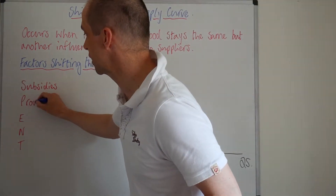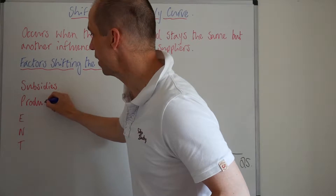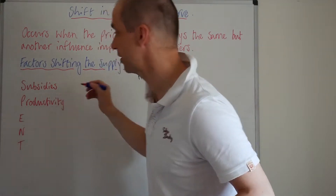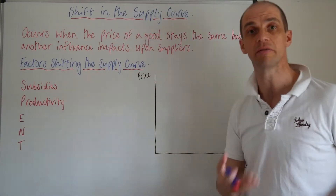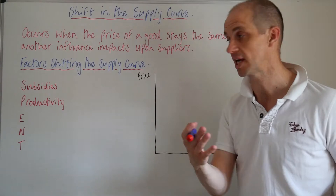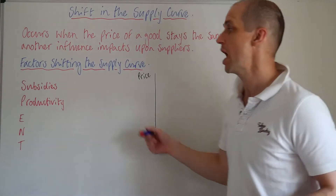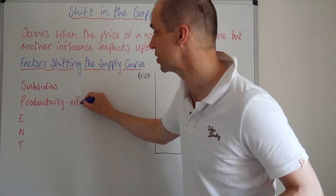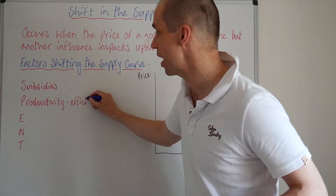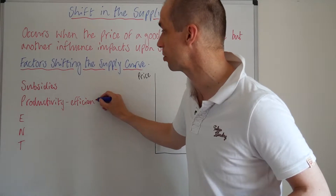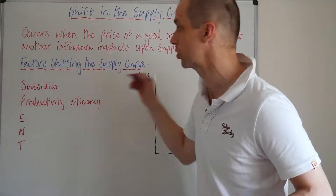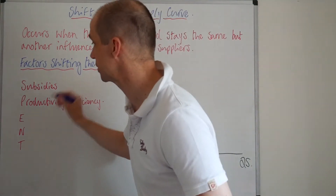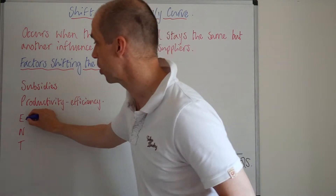Next up, productivity. So if the business is actually able to increase productivity — perhaps they invest in technology — that will help to drive efficiency and ensure that they can produce more goods at a cheaper marginal cost per unit.